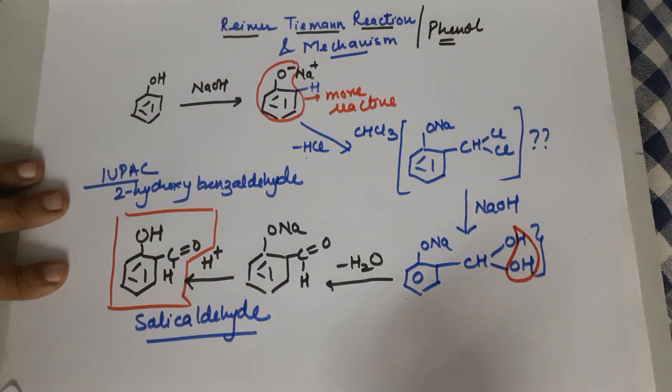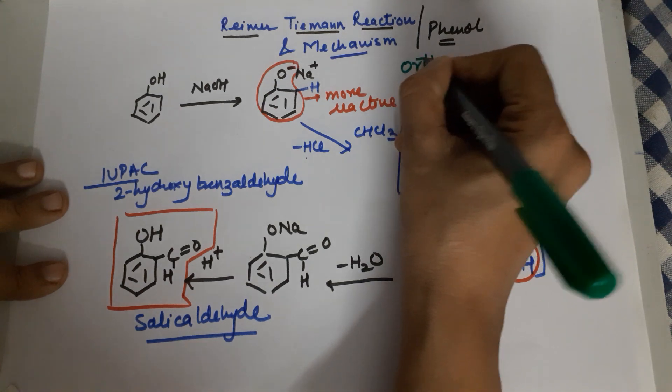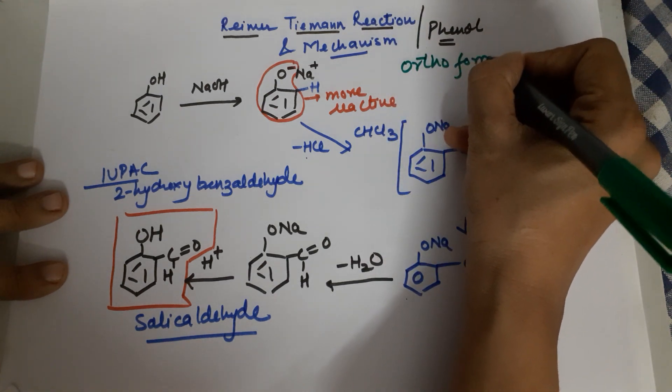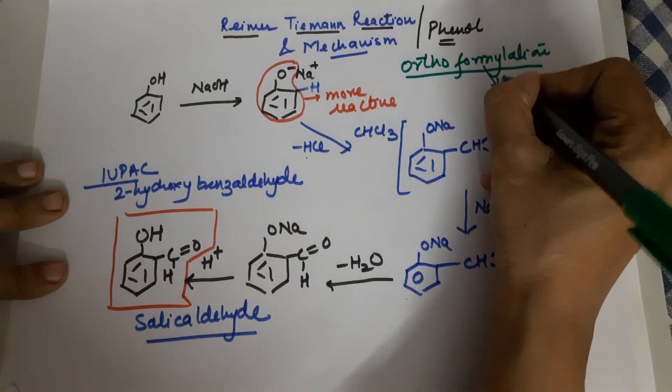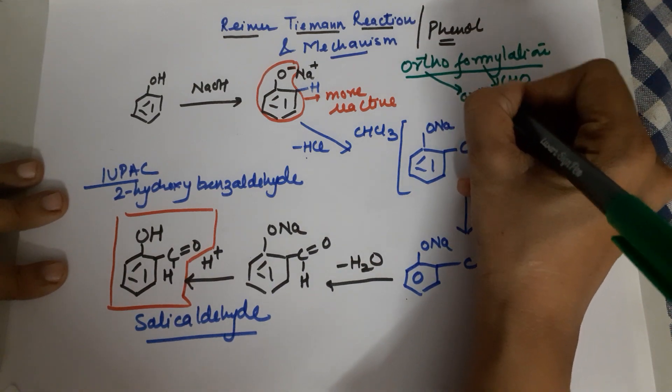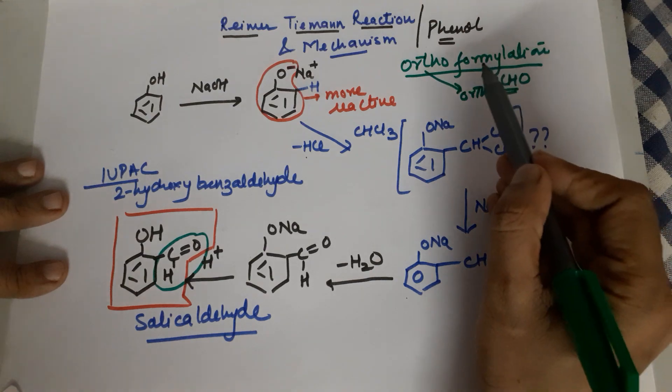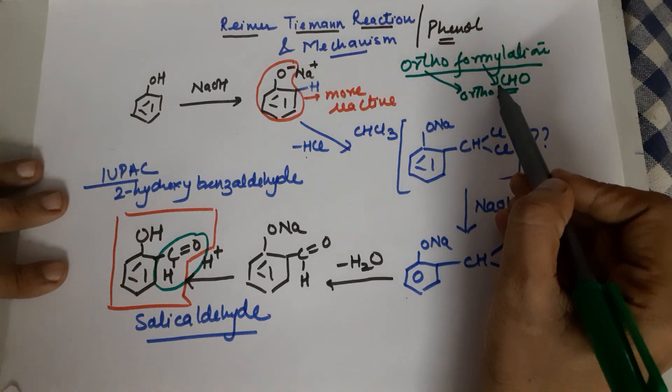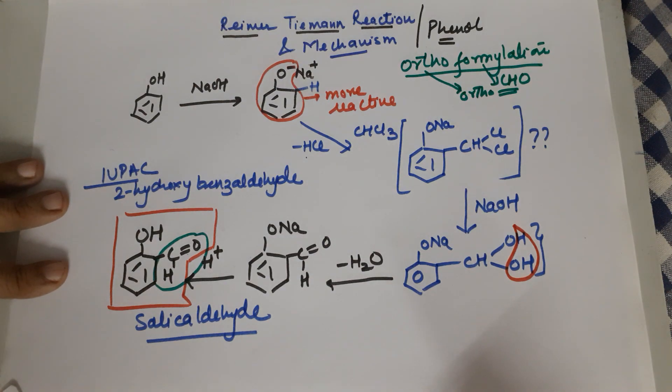This reaction is also known as a reaction of orthoformylation. What does it mean? You are introducing the formyl group which is the CHO at the ortho position. You have introduced the formyl group at the ortho position during the Reimer-Tiemann reaction is the reason why we call it under the category of orthoformylation.